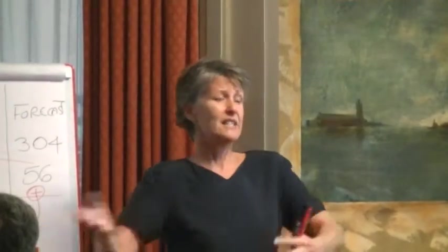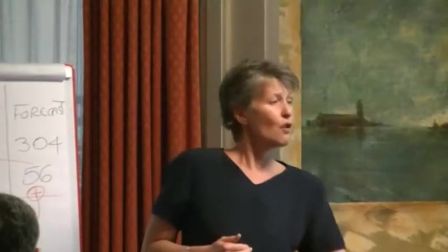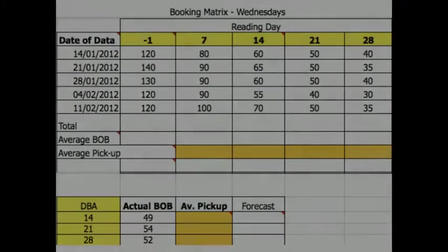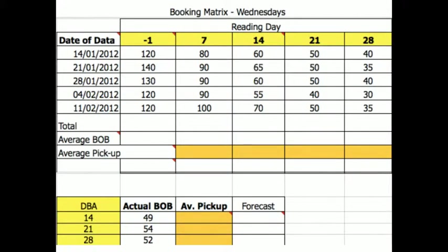What we're going to do now is we're going to do it from scratch. We're going to take five bits of data from the past, average that data out, create a booking curve, and from that booking curve calculate pickup. Then we're going to use that pickup to forecast for the future.